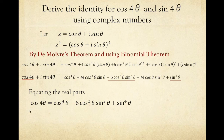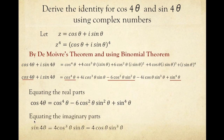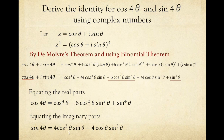Likewise, comparing the imaginary parts gives the identity for sine 4 theta, which equals 4 cosine cubed theta sine theta minus 4 cosine theta sine cubed theta. Remember, when extracting imaginary parts, take just the coefficients without the i. These are now the identities for cosine 4 theta and sine 4 theta.